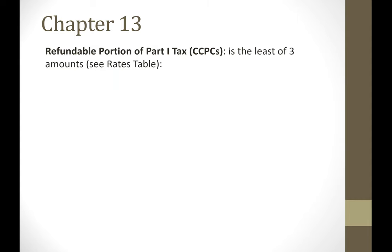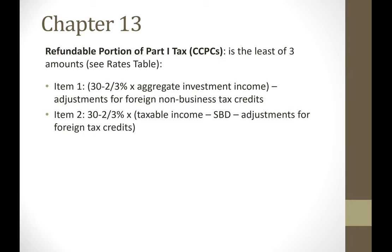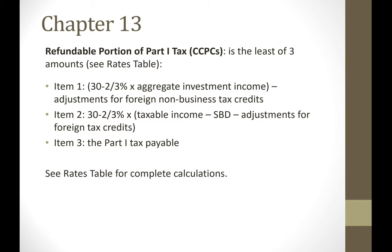The refundable portion of Part 1 tax is calculated as the lesser of three amounts: first, 30 and two-thirds percent times the company's aggregate investment income, with an adjustment for foreign non-business tax credits; second, 30 and two-thirds percent of the corporation's taxable income minus the small business deduction amount, also adjusted for foreign tax credits; and third, the Part 1 tax payable, which includes the ART. Refer to the rates table for the complete calculation when working through these examples.